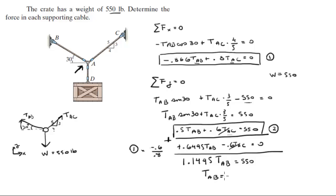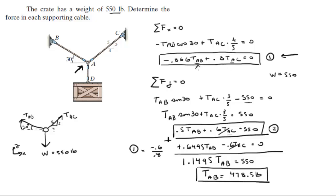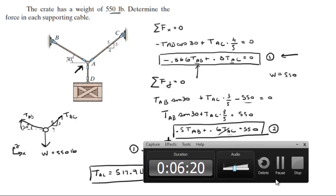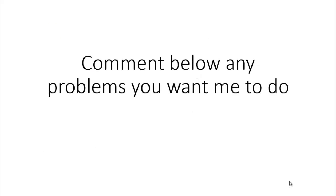Tension AB is equal to 478.5 pounds. Now that we have the tension of AB, you can plug it into either formula to solve for tension AC, and you're going to get that tension AC is equal to 517.9 pounds. Final answer. Please comment below if you want me to do any problems and I'll be happy to help — thank you!